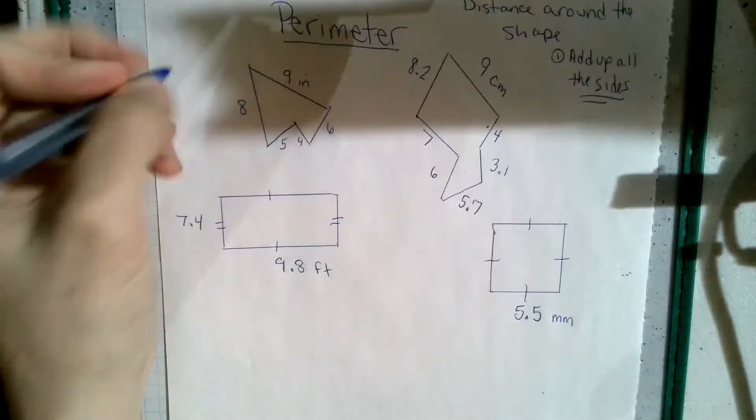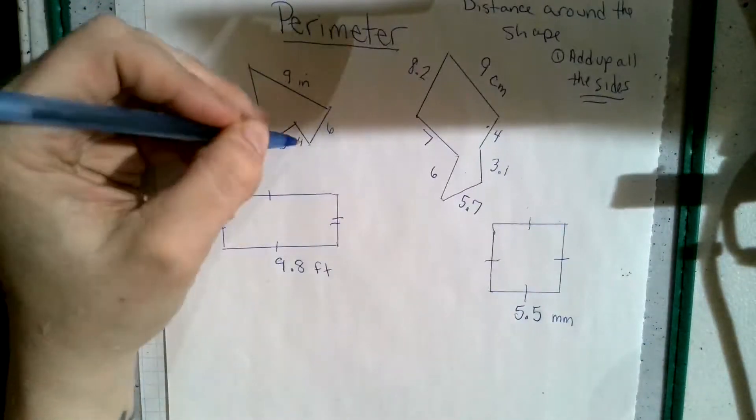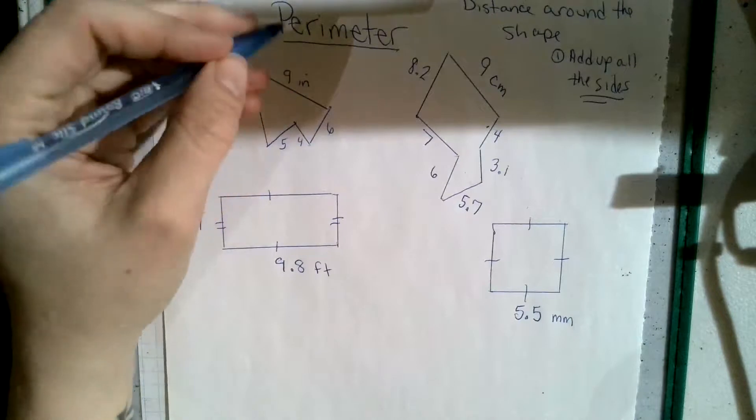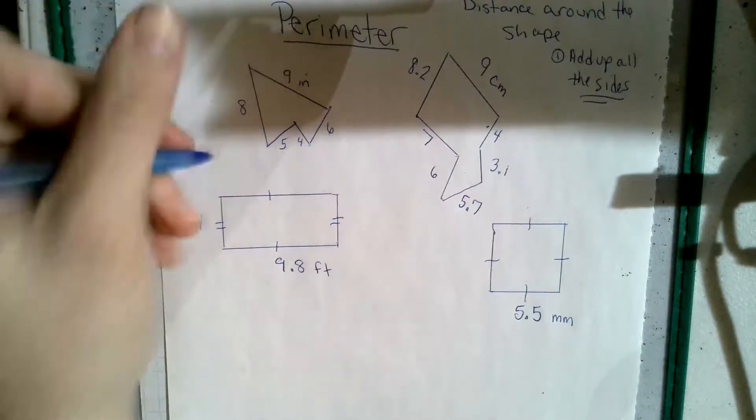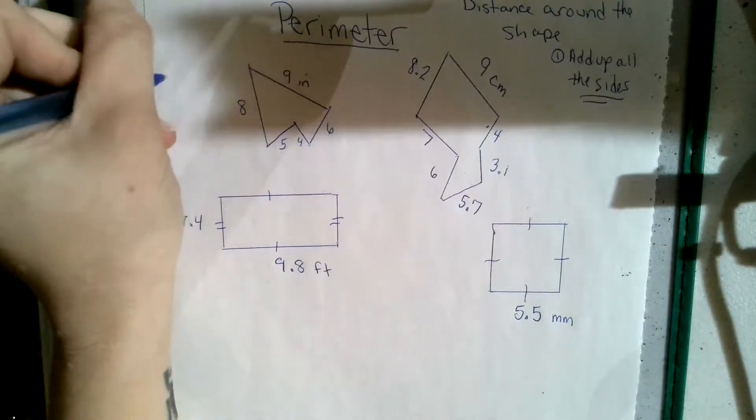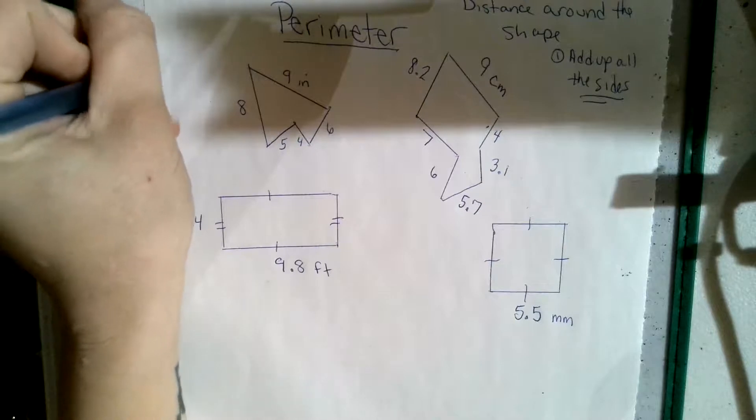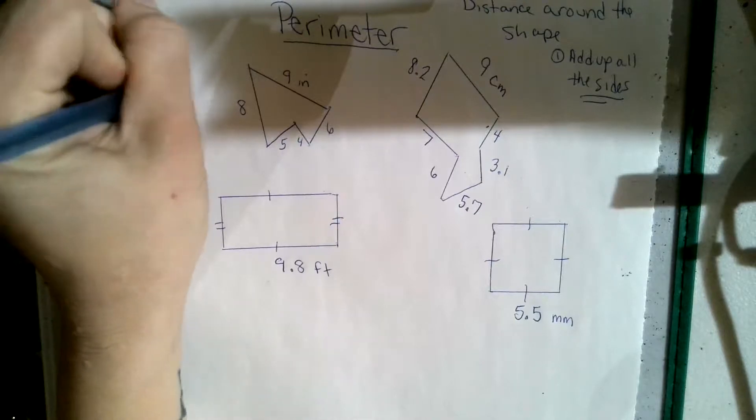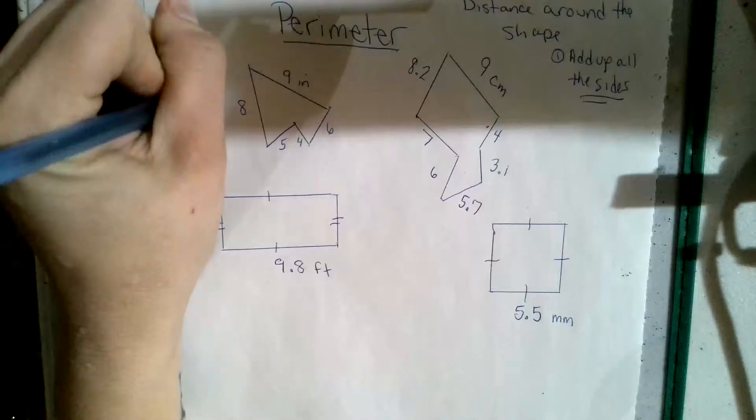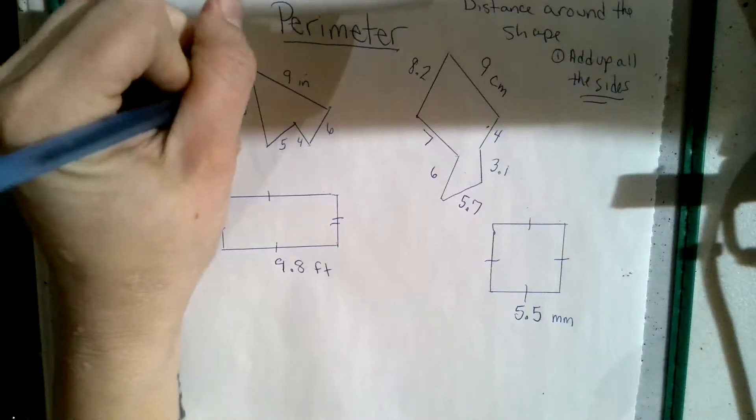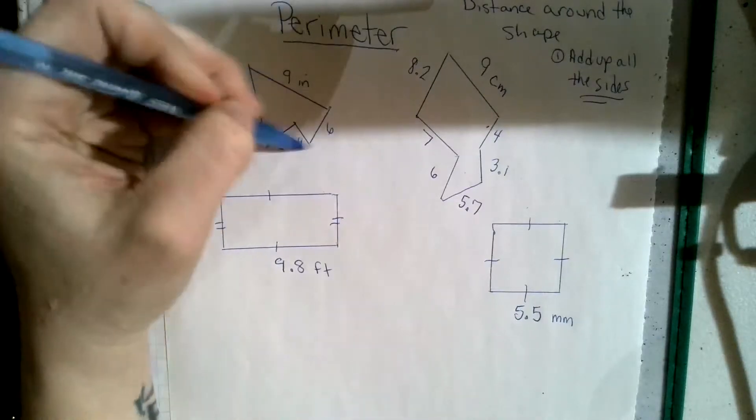Okay, so we're going to look at this first one. We notice there's 1, 2, 3, 4, 5. So we have a label of inches. That's going to be what we have. So we have perimeter equals 9 plus 8 plus 6 plus 5 plus 4.